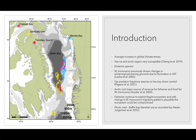Introduction: On the left is a picture of Baffin Bay, and here you can see the migratory patterns recorded with satellite tags by Hyde Jorgensen in 2012. There has been an average increase in global temperatures over time, and sea ice in the arctic region is especially susceptible because most of the geography is sea ice. The narwhal is an endemic species, meaning the species was developed in and lives exclusively in the arctic.